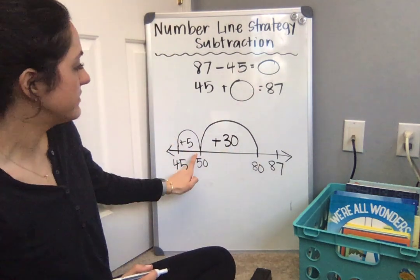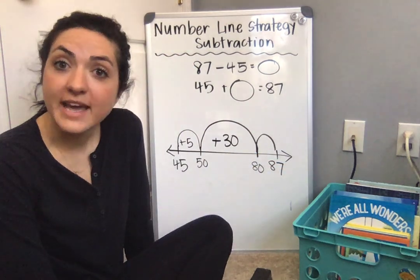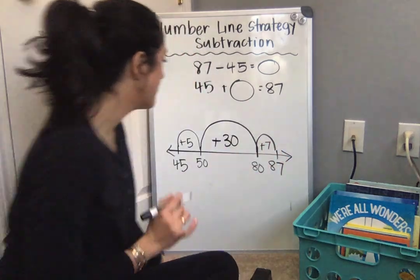So I did a 5 jump and a 30 jump. Now I need to get from 80 to 87. Do you know how many I have to add in that jump? You're right, it's plus 7.